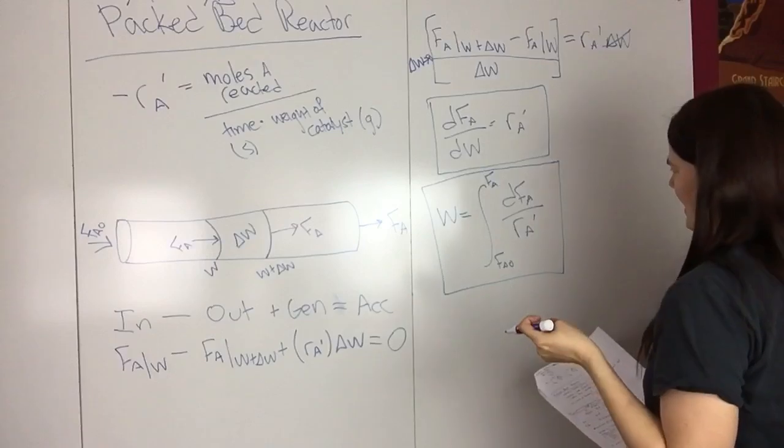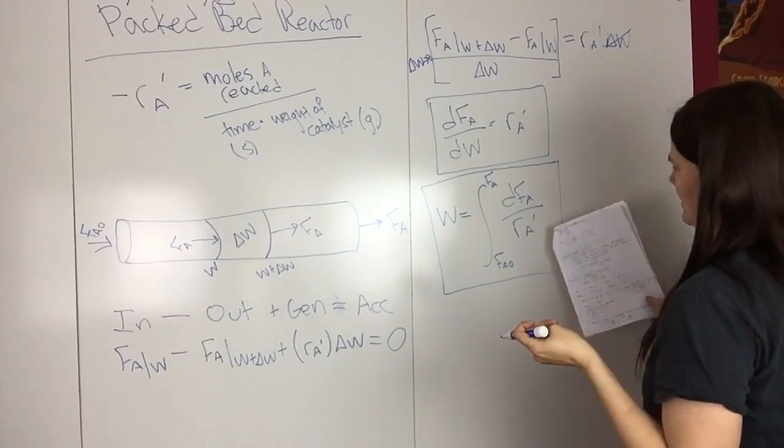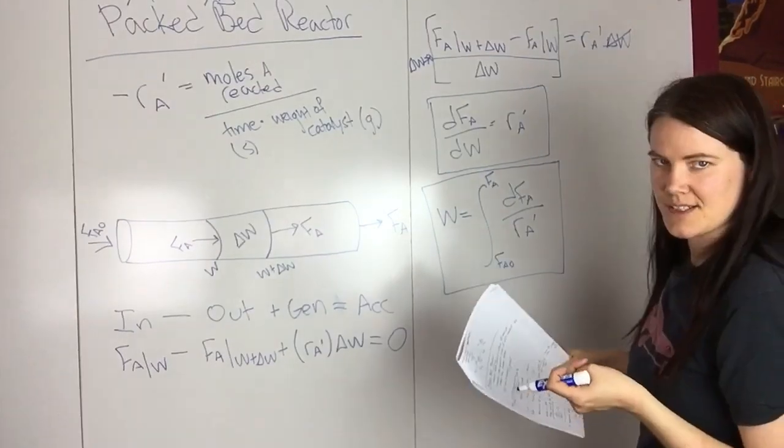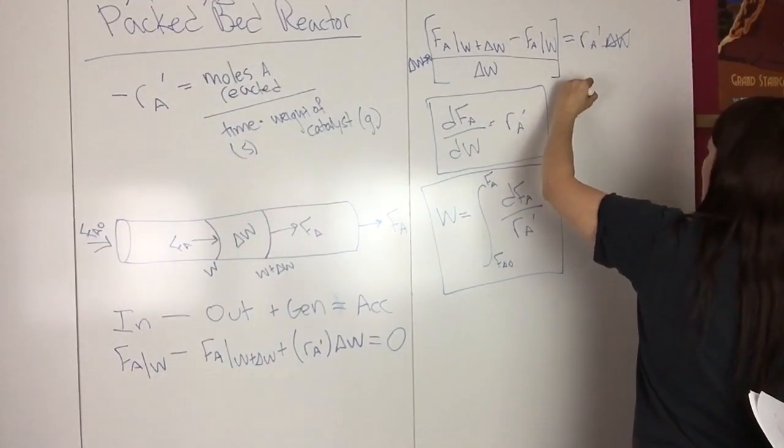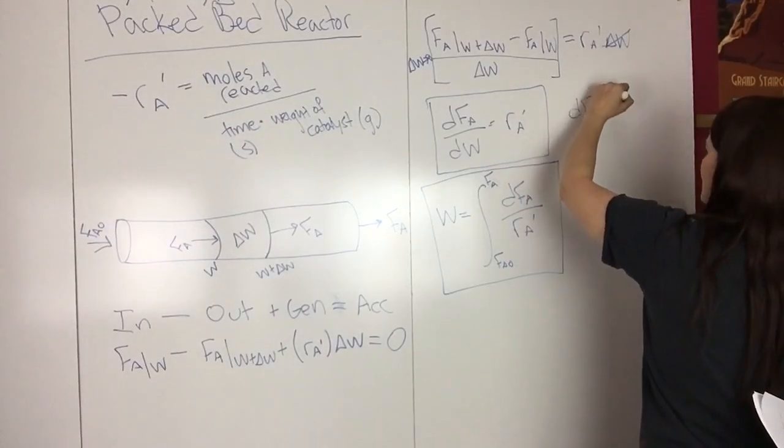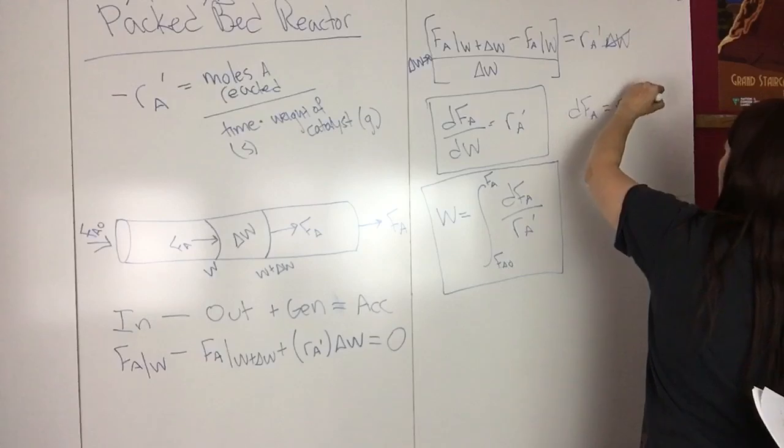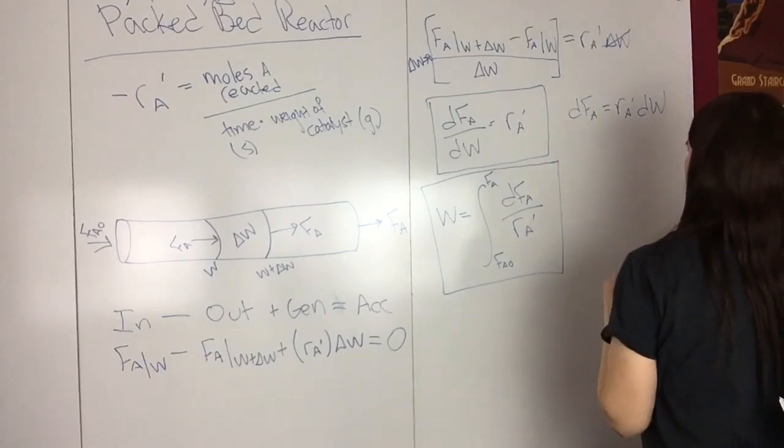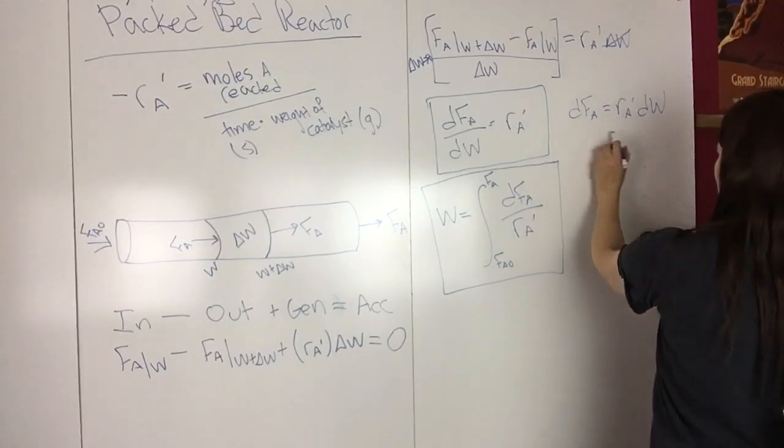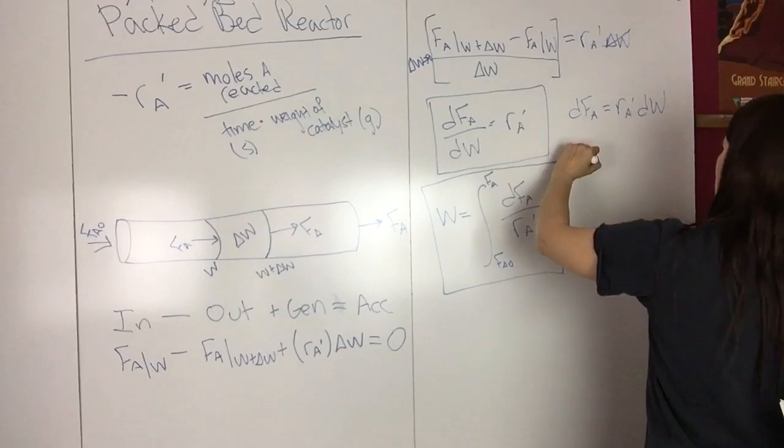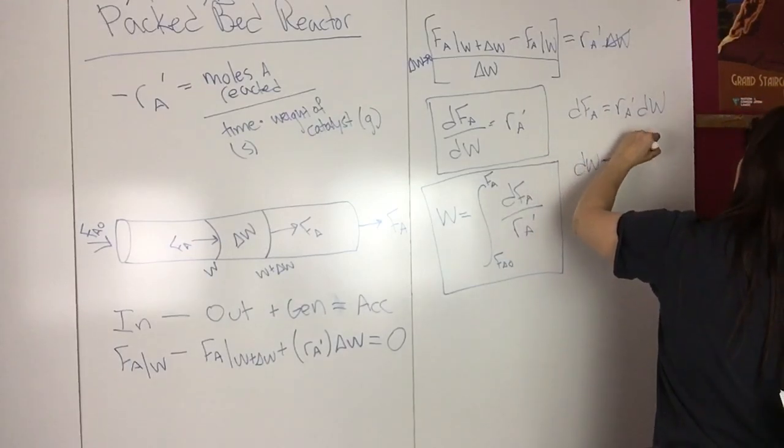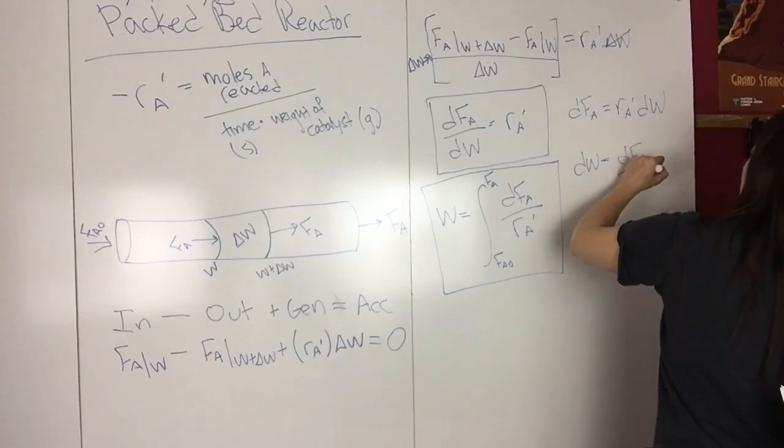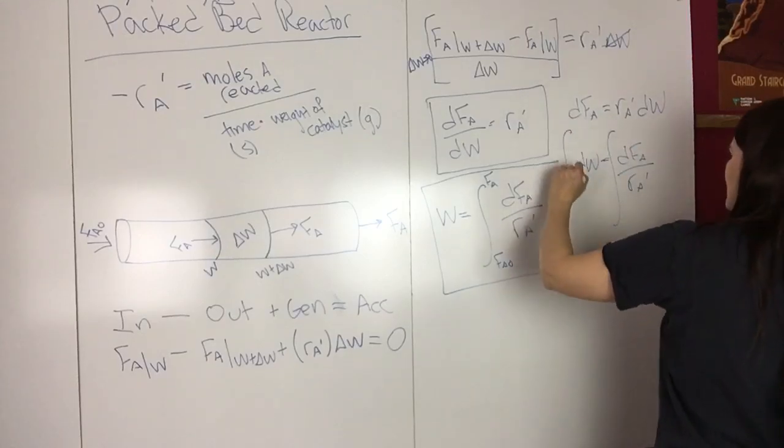And if you want to know how to go from this to this, it's pretty much just rearranging the equation, so you can multiply, so you have dF_A equals R_A prime dW, and then divide the R_A over, so rewrite dW equals dF_A over R_A prime, and then we integrate this.